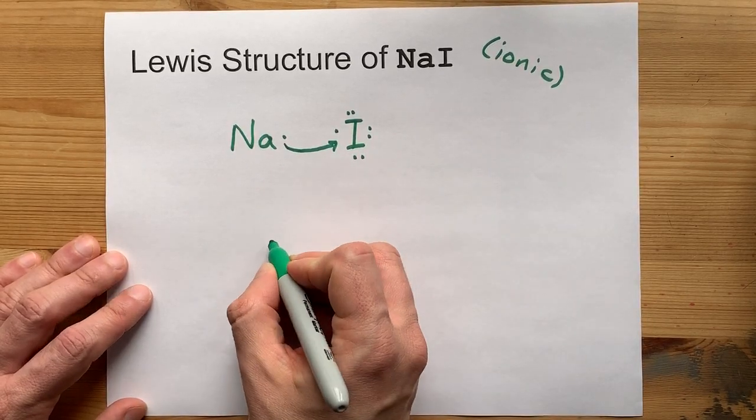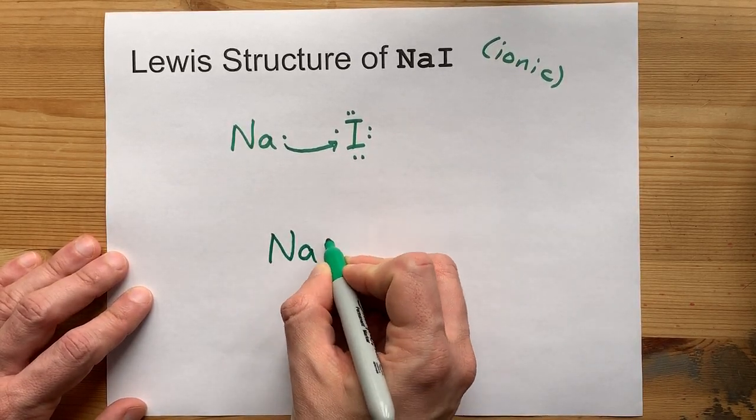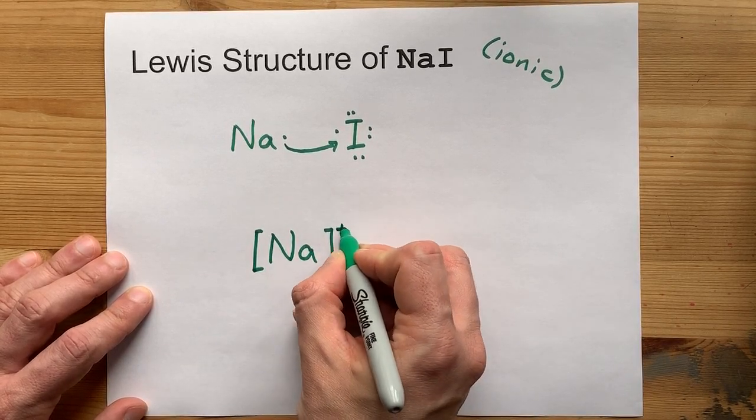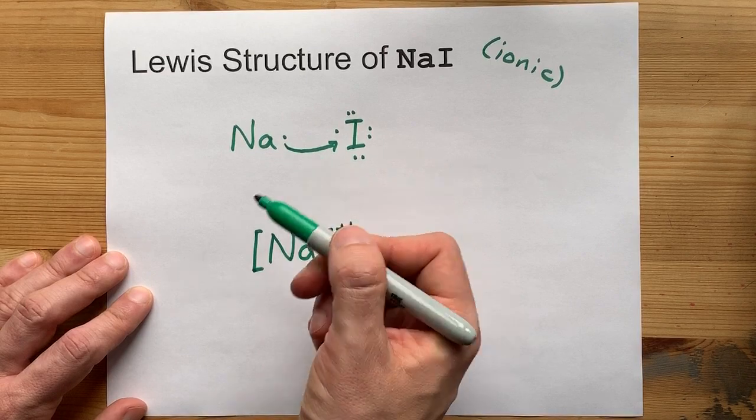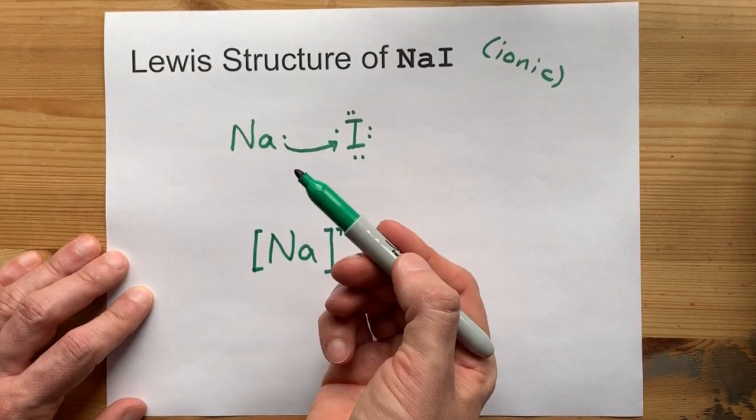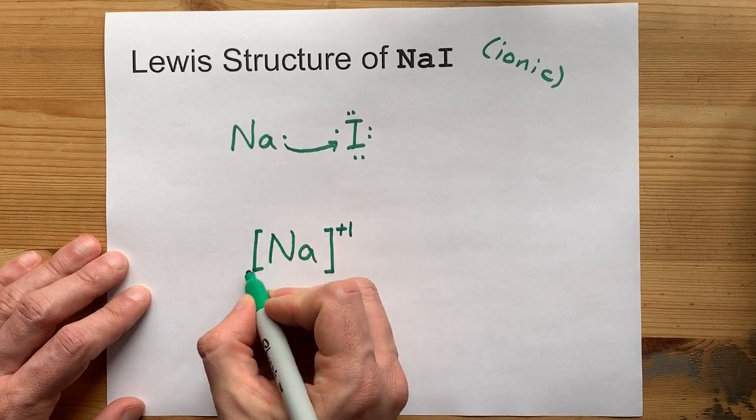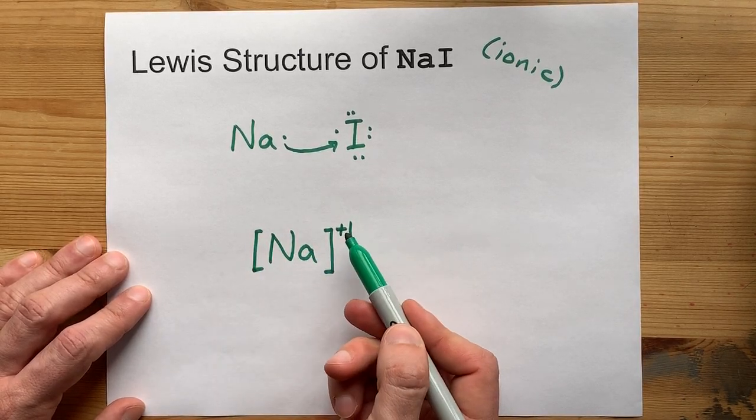One of each, and they'll both be stable. So, Na will have lost an electron. Because of that, it becomes a plus one ion because you're losing a negative. Minusing a negative actually gives you a positive.